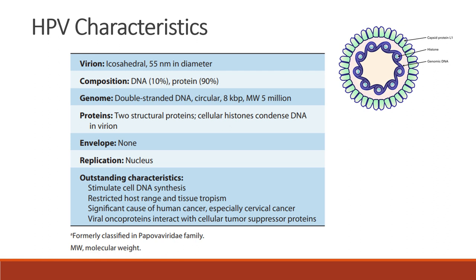For the characteristics of the human papillomavirus: the virion is icosahedral in shape with 20 equilateral triangular sides, 55 nanometers in diameter, composed of 10% DNA and 90% protein. The genome is double-stranded circular DNA with 8 kilobase pairs and molecular weight of 5 million. It has two structural proteins, cellular histones, and condensed DNA in the virion. It has no envelope, replication takes place in the nucleus, it can stimulate cell DNA synthesis, has restricted host range and tissue tropism, is a significant cause of cervical cancer, and viral oncoproteins interact with cellular tumor suppressor proteins.